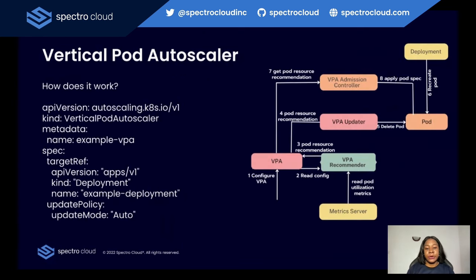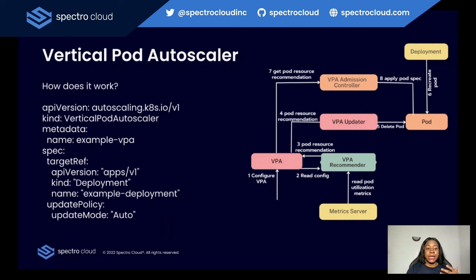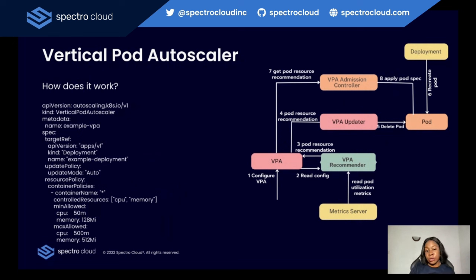If you look at the diagram on your screen, the VPA collects data on how much CPU and memory pods are using. It then looks at historical data to see if these pods consistently need more or less resources than initially requested. Based on this analysis, VPA suggests adjusting resource requests for each pod. It can automatically update pod resource requests to match the recommendations made by the VPA recommender. It is very important to note that VPA operates by collecting historical resource utilization data from running pods and then recommending or applying adjustments to their resource requests. The manifest shown is a Vertical Pod Autoscaler that, when applied to your cluster, configures VPA to adjust resource requests and limits for containers within the specified deployment based on observed usage patterns.